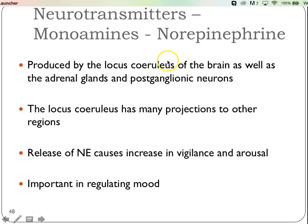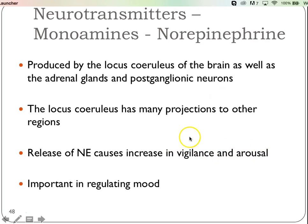Another neurotransmitter is norepinephrine, produced by a brain region called the locus coeruleus and also by your adrenal glands. Another name for norepinephrine is noradrenaline, but we tend to call it norepinephrine in neuroscience. The locus coeruleus has projections to many other brain regions. It helps increase vigilance and arousal — not just waking you up but helping you pay attention. If levels get too high, you can no longer pay attention — you're just not focused, looking at everything at once.